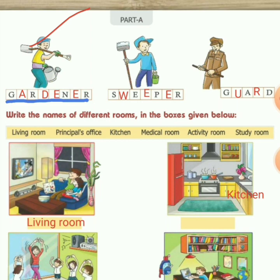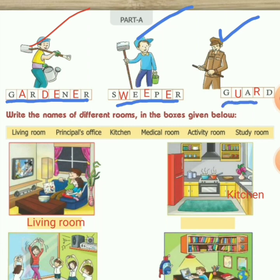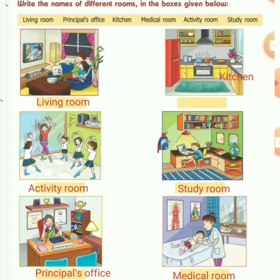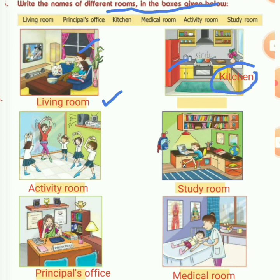Next picture: he has a mop in his hand, so he is a sweeper. The spelling of sweeper is S-W-E-E-P-E-R. Next is a guard — the spelling is G-U-A-R-D. For question 5, write the names of different rooms from the pictures: living room, kitchen, activity room, study room, principal's office, and medical room.